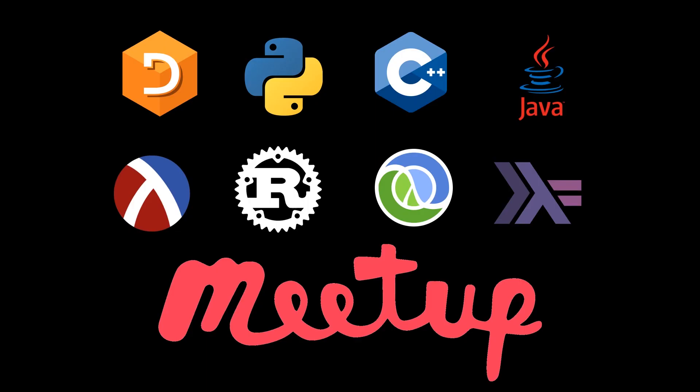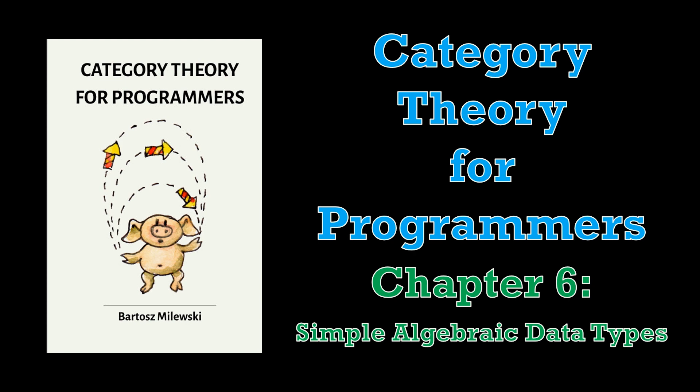Welcome to a Programming Languages virtual meetup pre-recording. My name is Conor Hoekstra, and in today's video we're going to be covering Chapter 6 of Category Theory for Programmers by Bartosz Milewski, entitled Simple Algebraic Data Types.